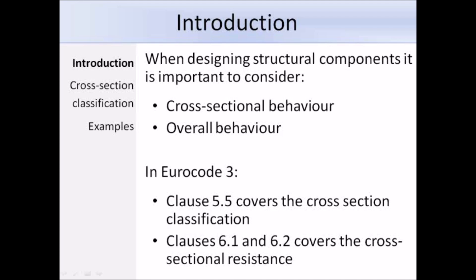Whether in the elastic or inelastic material range, cross-sectional resistance and rotation capacity are limited by the effects of local buckling. As in BS 5950, Eurocode 3 accounts for the effects of local buckling through cross-section classification. The relevant Eurocode sections are clause 5.5, which covers cross-section classification, and clauses 6.1 and 6.2, which cover cross-section resistance.